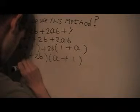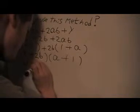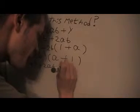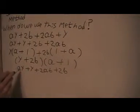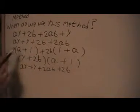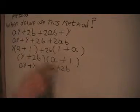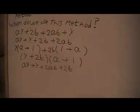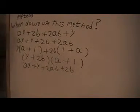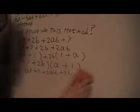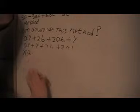You can multiply these out to verify we get the right answer. Multiplying out gives ay + y + 2ab + 2b, which is the same as what we started with — just in a different order. So we've factored it correctly.